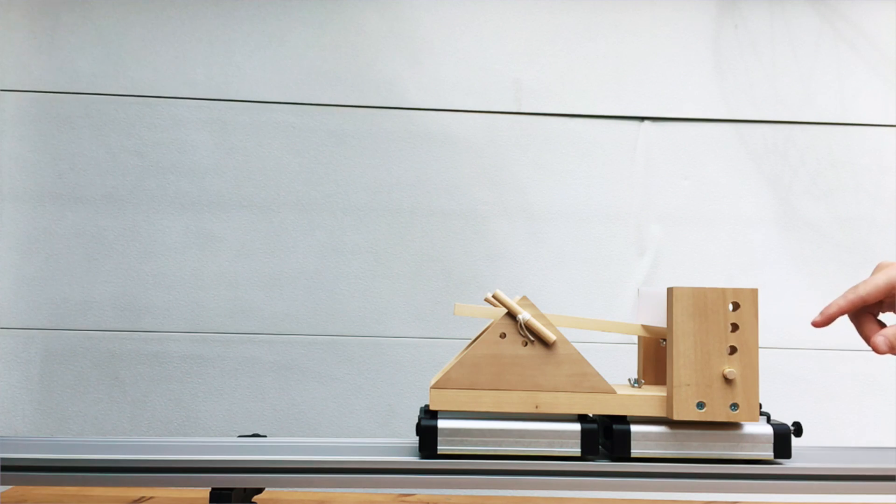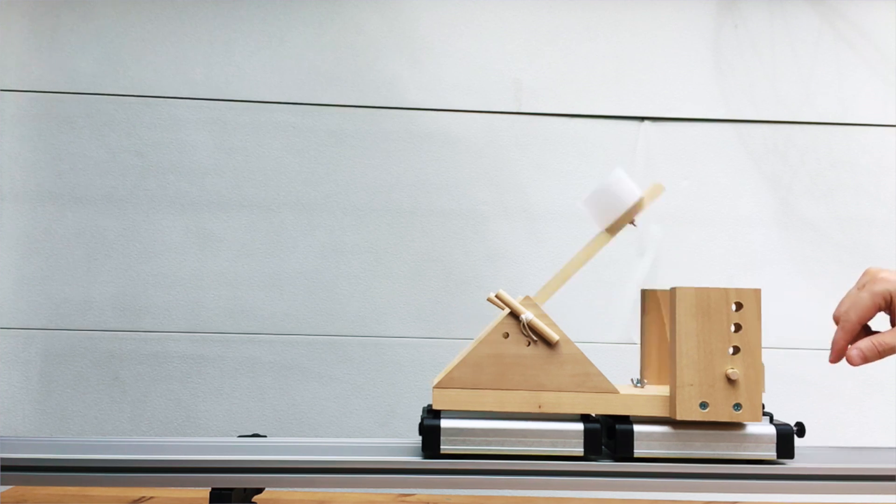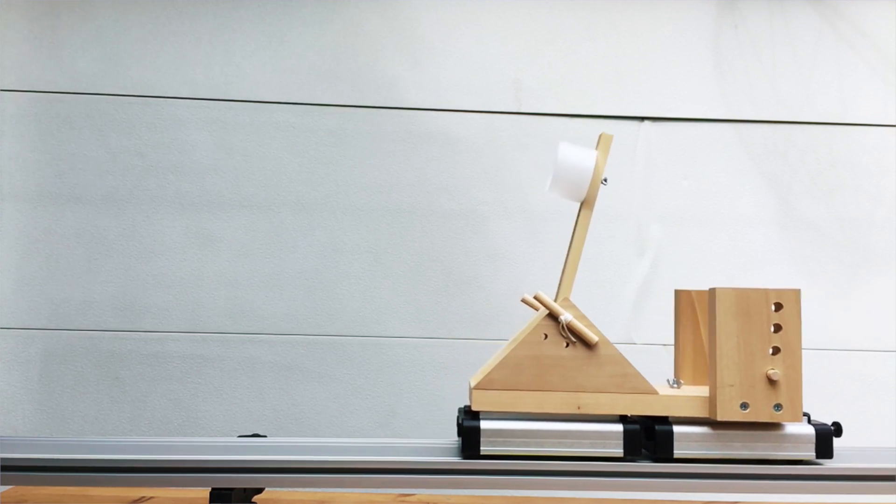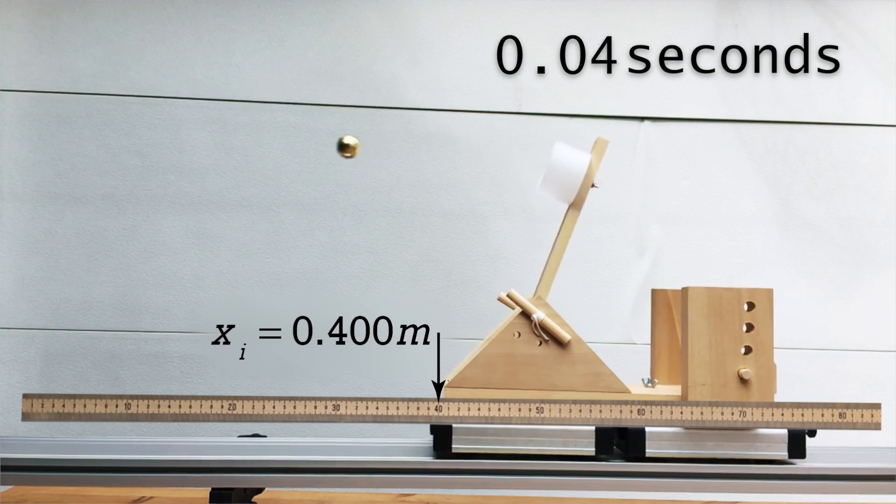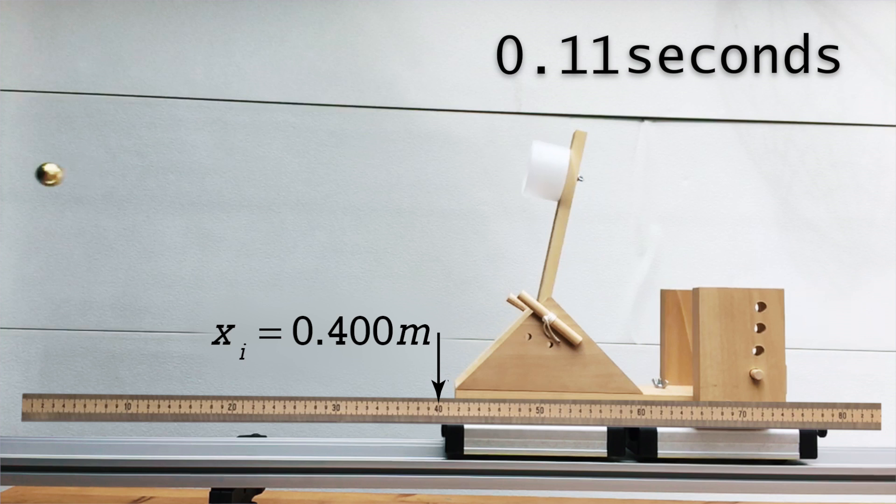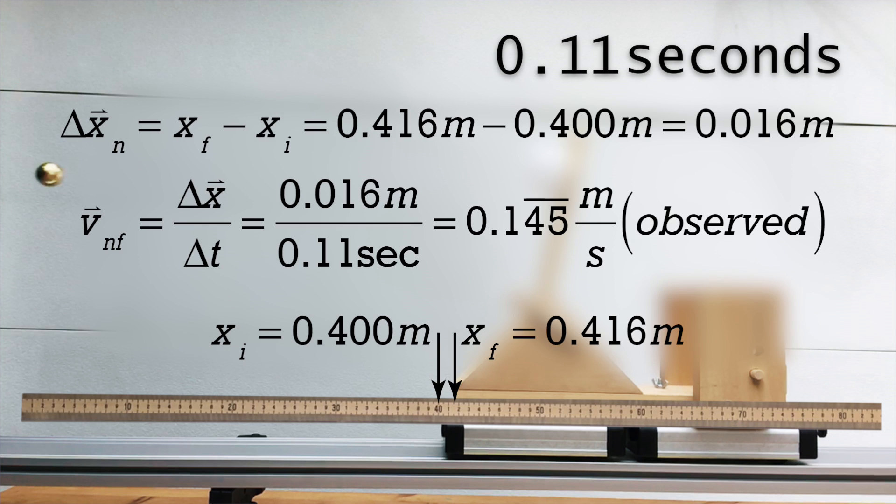Correct. And now we can measure the displacement and change in time for the nerdapult to determine its final velocity. The nerdapult starts at 0.400 meters, and after the same 0.11 seconds, the nerdapult is now at 0.416 meters, which means the final velocity of the nerdapult is positive 0.145 meters per second with the 4-5 repeating.